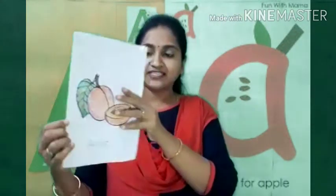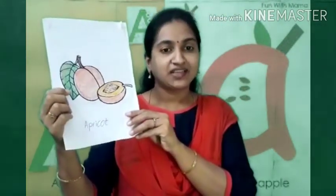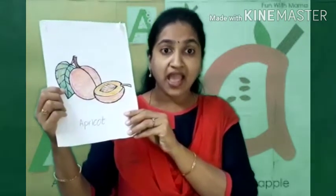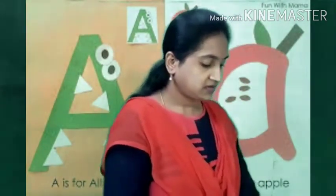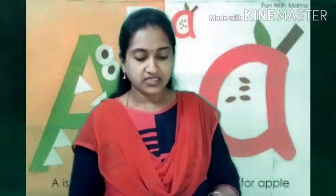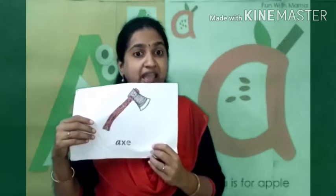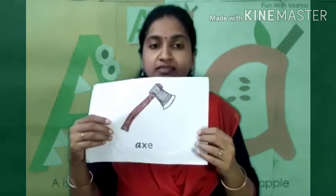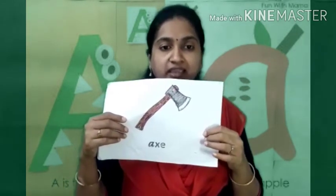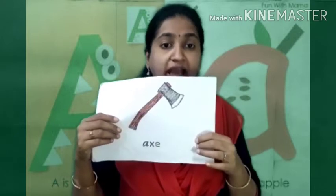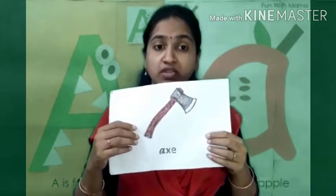See, what is this? Yes, this is a fruit. A, a, a, apricot. Very good. Now see, what is this, children? Have you seen this? This is an axe. A, a, a, axe. Say all of you: A, a, a, axe. This sound starts with A. A sounds — A, axe. We will use this axe to cut big logs. This is an axe.